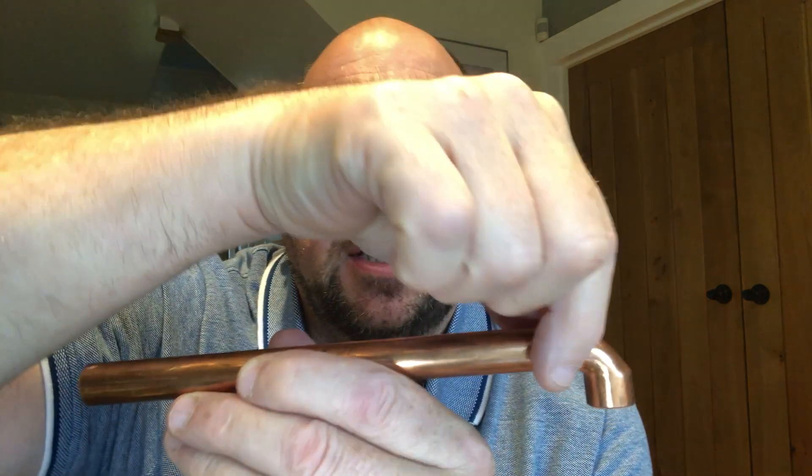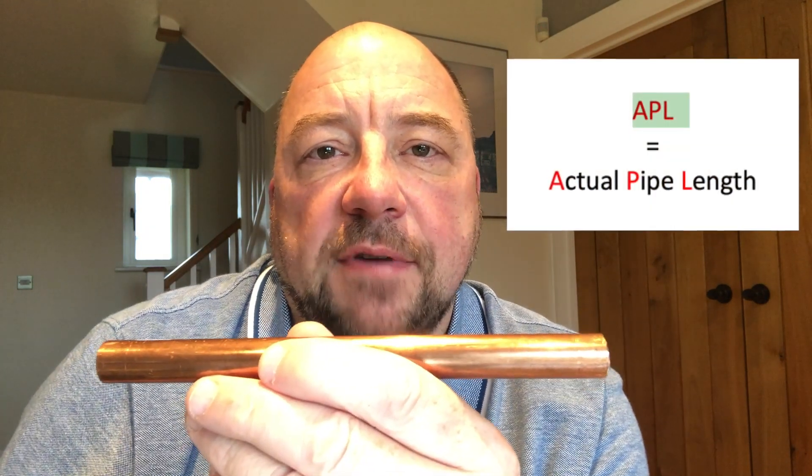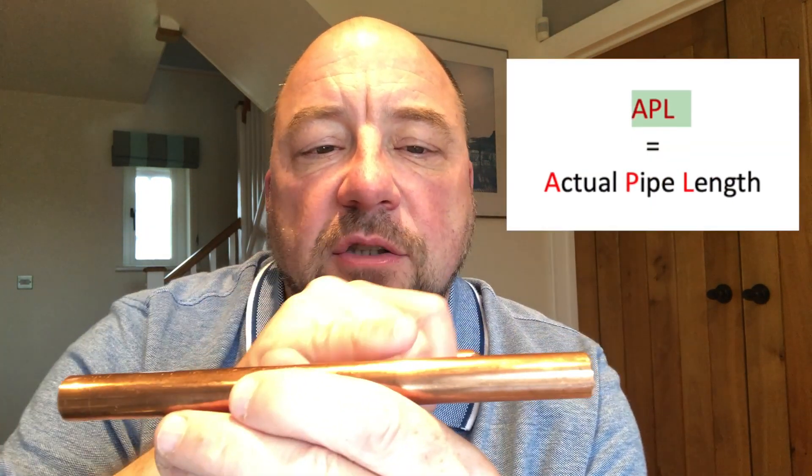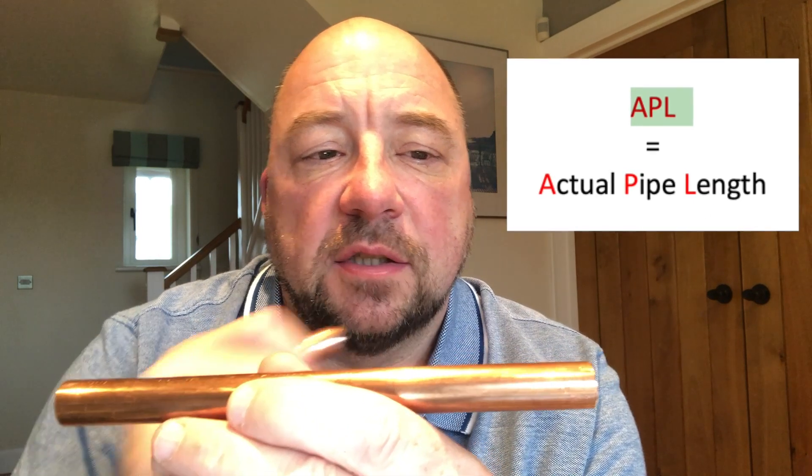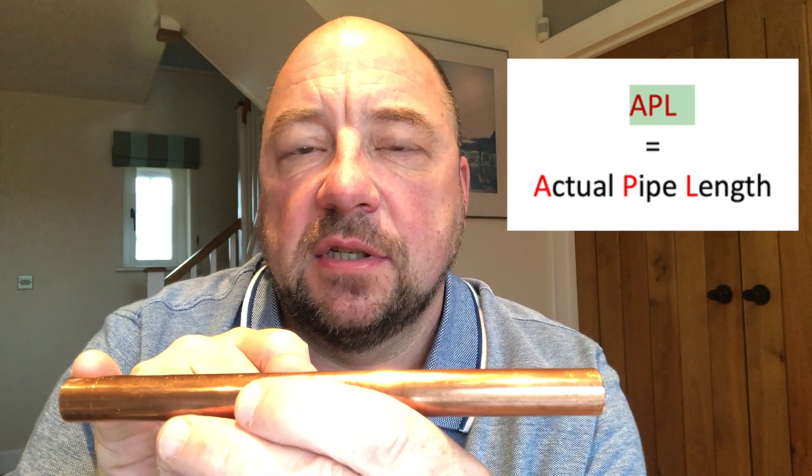If we've got a center to center of 200 millimeters and there's 9mm in this one and 9mm in this one, 9 plus 9 is 18, so 200 minus 18 gives us 182 millimeters. What we're going to use now is these three letters: APL. APL stands for actual pipe length.